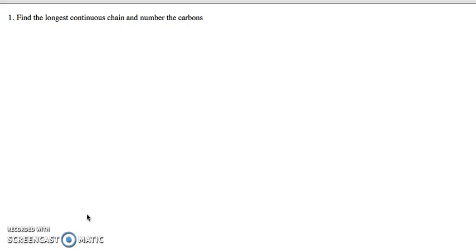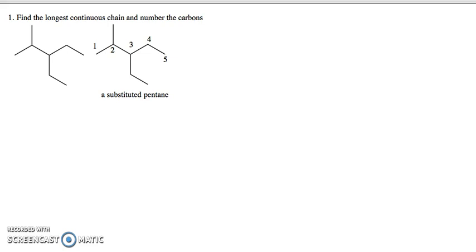Then we number the carbons on that chain. This is not always straightforward. For instance, in this compound we start numbering here and go one, two, three, four, five — five carbons with substituents coming off of it. The longest straight chain is five carbons, so we name this as a substituted pentane.